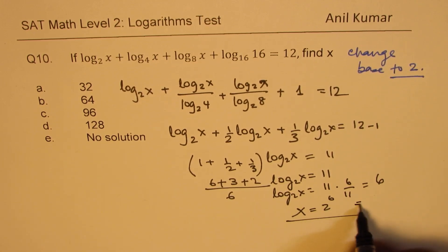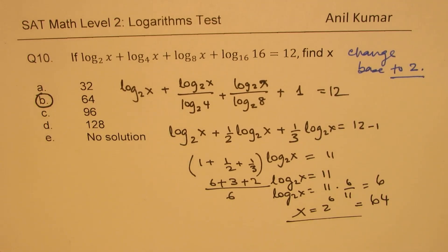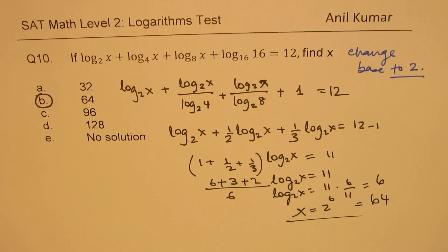So x = 2⁶ = 64, and option b is the right answer. Likewise, we can solve all these questions — the important thing is how effectively we apply the logarithm rules. I hope you find this interesting and useful. Feel free to write your comments, share your views, like and subscribe to my videos. Thanks for your time, and all the best!